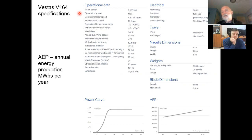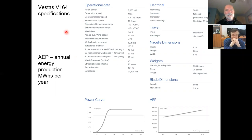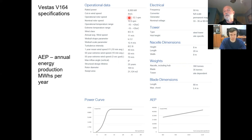Going through the specifications: first, the rated power is the maximum power the turbine produces — whenever you hear a turbine size given in megawatts, that is the rated power. Then there's the cut-in wind speed, which is the lowest wind speed at which power is produced — here the power curve rises from zero at 4 meters per second. The operational rotor speed ranges from 4.8 to 12.1 rpm — quite slow for such large turbines.